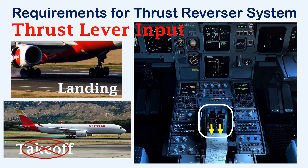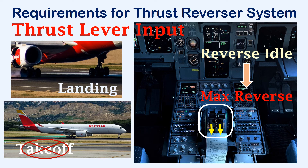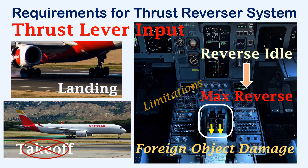Similar to forward thrust application, the reverse thrust may also be adjusted. The reverse thrust may be increased from reverse idle power to maximum reverse power by moving the levers further back. Maximum reverse thrust will be used initially to reduce the speed of the aircraft, but there can be certain speed limitations until which maximum reverse can be used. This is to avoid foreign object damage on the engines.